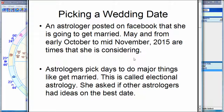Here's the situation. An astrologer posted on Facebook that she's going to get married, and she's thinking May or October, possibly up to mid-November of 2015. These are the times she's considering. This is something astrologers do — they pick days for major events, and it can be very important to get the right date. She asked other astrologers if they had any ideas on the best date.